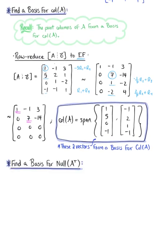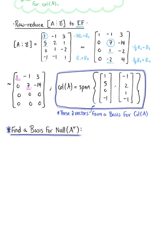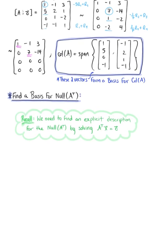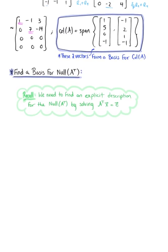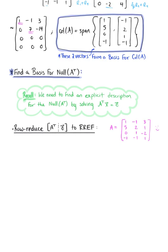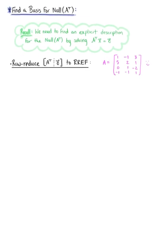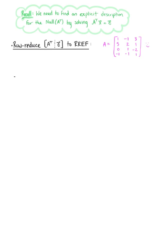The next thing we need to do is find a basis for the null space of A transpose. To find an explicit description for the null space of A transpose, we need to solve the matrix equation A transpose times vector x equals the zero vector. So we need to row reduce A transpose augmented with the zero vector to row-reduced echelon form.